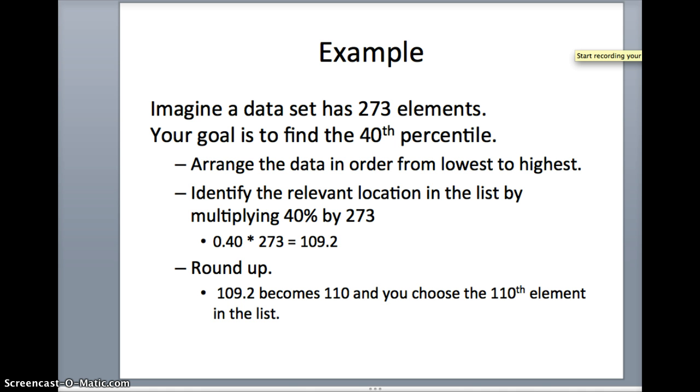We want to identify the relevant location in the list. We have to beat 40% of the data, and the data set has 273 elements. So 40% of 273 is 109.2. I need to be better than 109.2 people. If I am at the 110th, I'm certainly better than 109, hence 109.2.